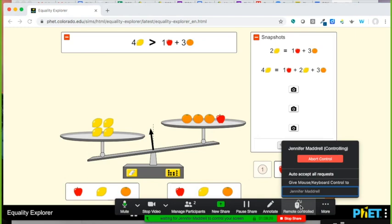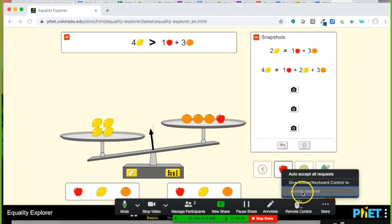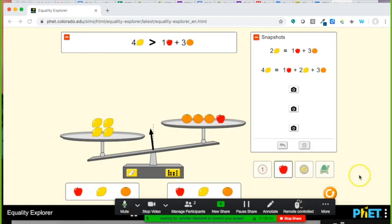Maybe you have them on audio and they say that. Maybe you use the chat window for them to volunteer. But again, you could abort control from Jennifer and give it to another student. Again, she's the only person I have here for this demo. So I'm going to give control back to Jennifer and we're going to have her add fruit to balance this out.